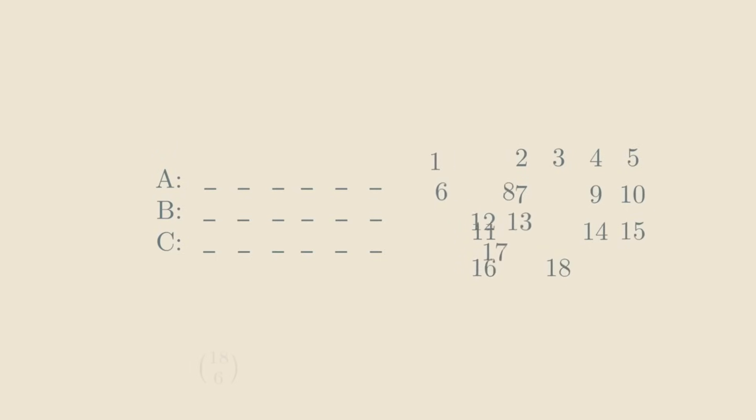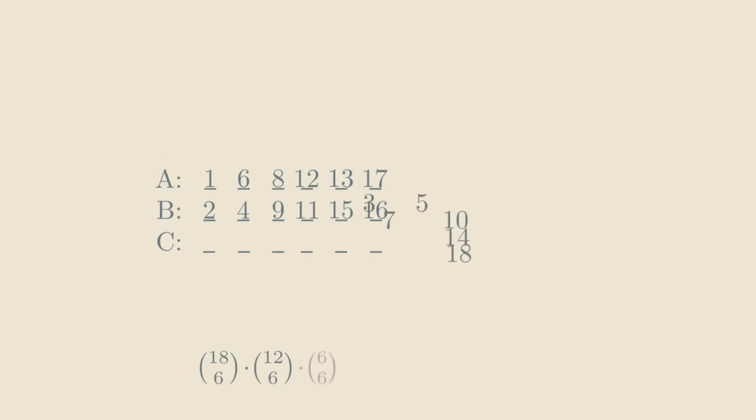Then, there are 18 choose 6 ways of picking the numbers for the first die. Next, we pick 6 numbers for the second die, which we can do in 12 choose 6 ways. And after this, the numbers for the third die are fixed. If you do the math, you'll find that there are only about 17 million candidates. So, we just checked all of them and found that there actually are some fair dice.